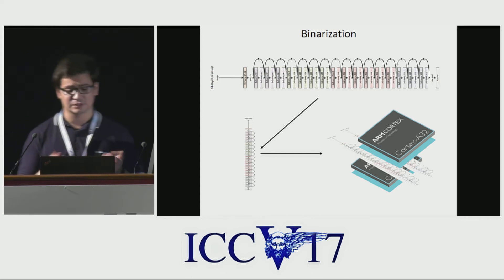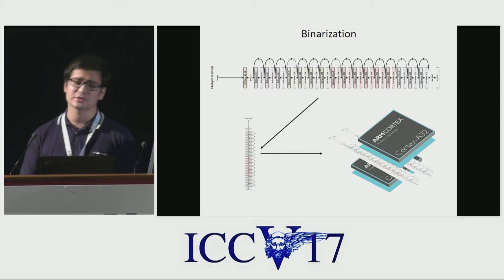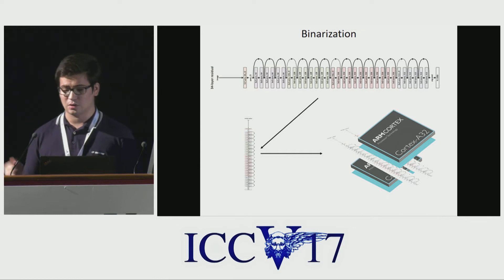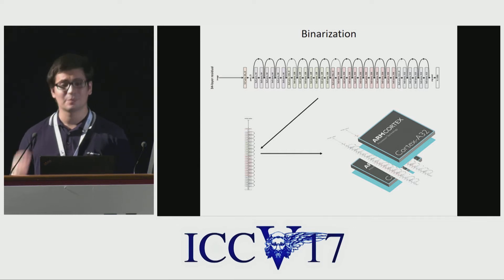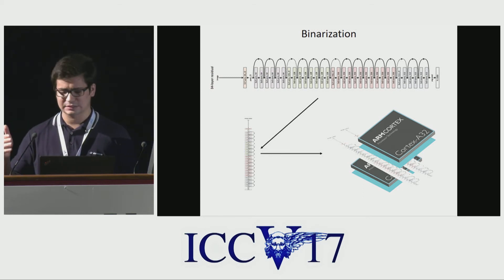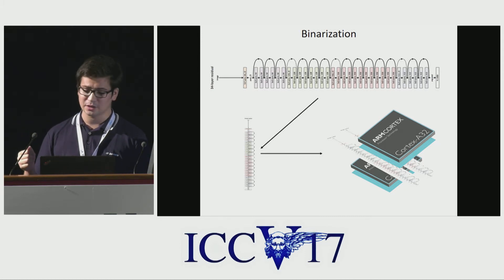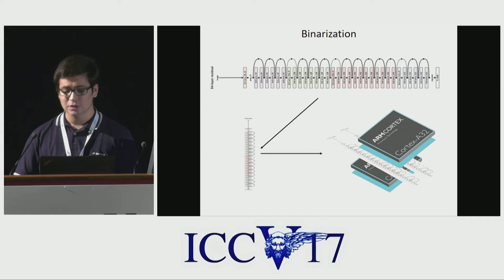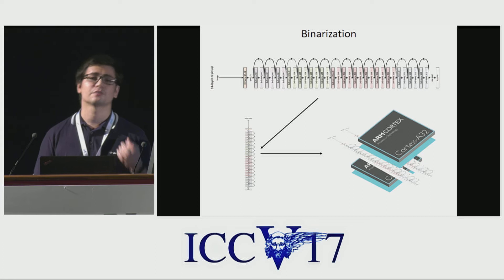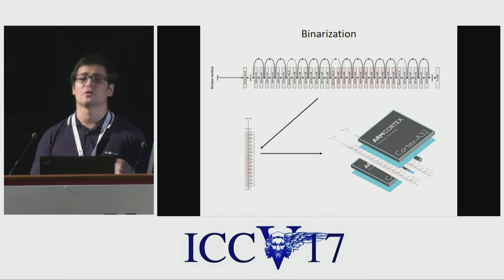While initially thought to be infeasible, recent work by Courbariaux et al. and Rastegari et al. show promising results on classification and object detection. Our method builds up on their theoretical findings, but follows a different route. Instead of improving the binarization process itself, we focus on developing CNN architectures suitable and optimized for binarization. To this end, we propose a novel residual block, specially tailored for binary networks, and offer a rigorous investigation of our design choices.